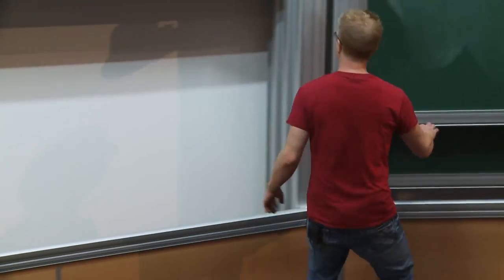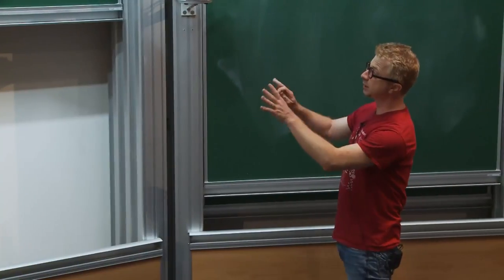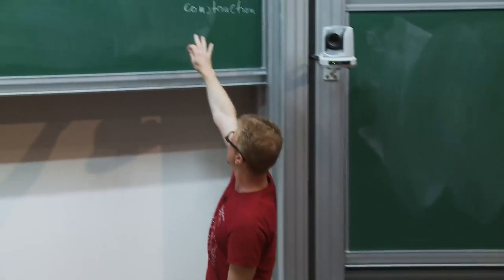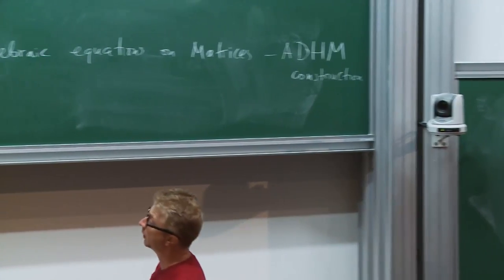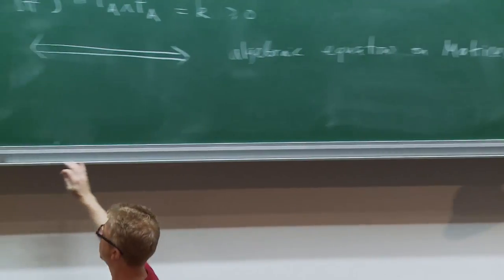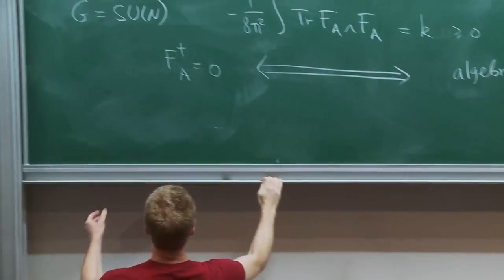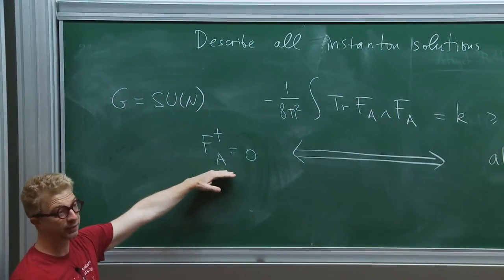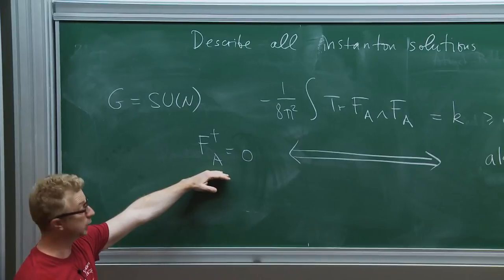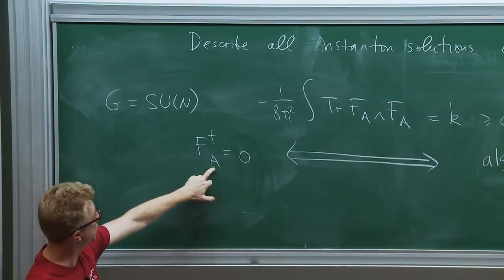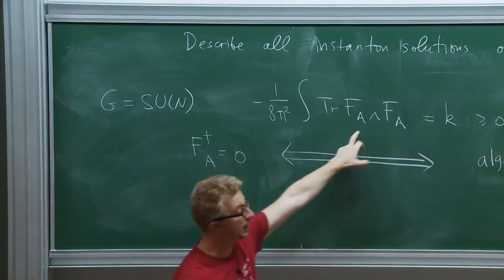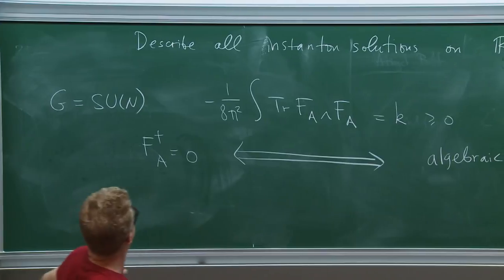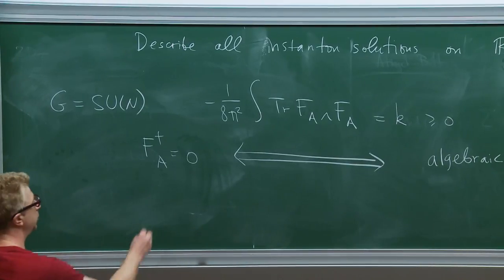There are two ways: I can start by just stating the result or I can try to motivate it. Let me try to motivate it. The idea is that suppose you have an instanton — a solution of the self-duality equation with finite action.